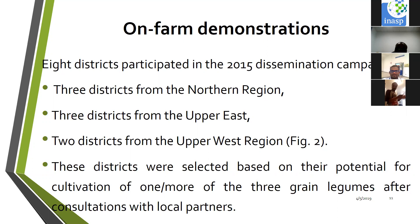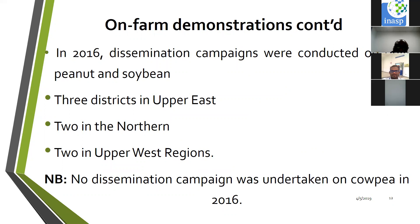Districts were selected in consultation with local partners, especially religious relief organizations that live in the communities. The same approach was used in 2016, with one difference: no dissemination campaign was undertaken on cowpea in 2016, because farmers felt there was too much cowpea in the system from the previous year's production, reducing confidence in its marketability.